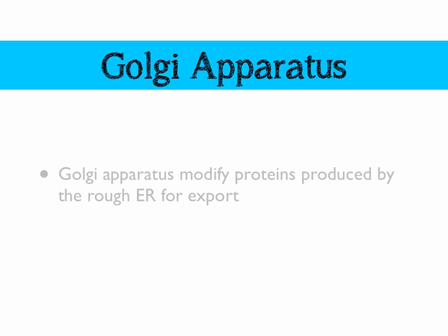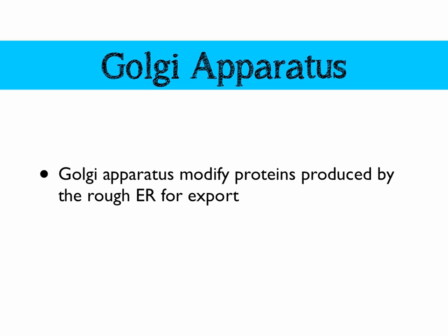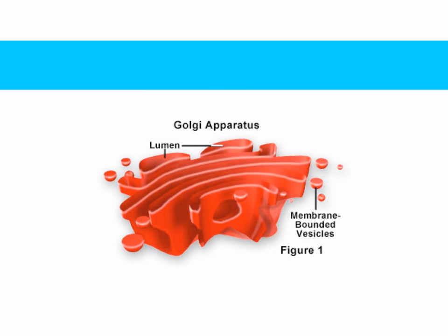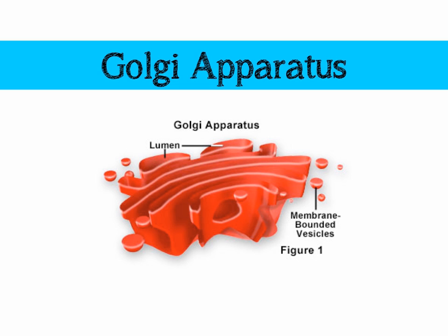The Golgi apparatus is the next one. It is responsible for modifying proteins produced by the rough endoplasmic reticulum, mainly for export outside of the cell. It packages the proteins in small membrane bubbles called vesicles. There's our Golgi apparatus — it kind of looks like a stack of dinner plates.